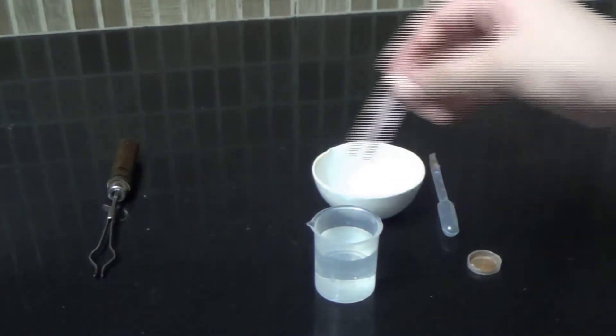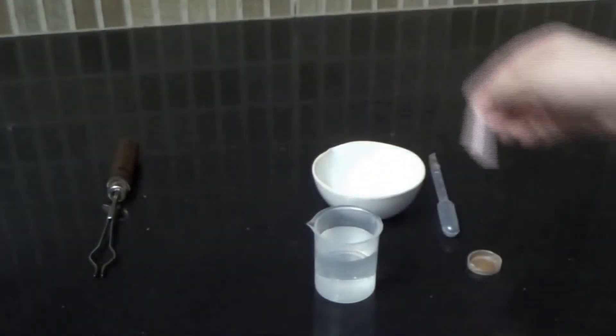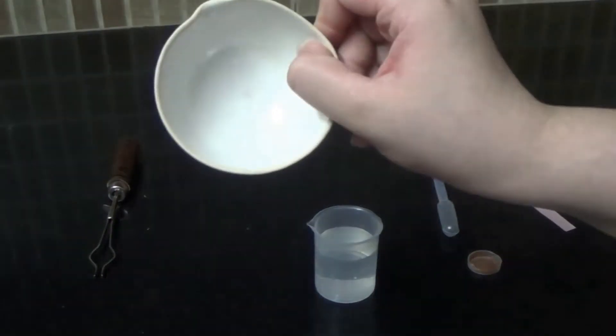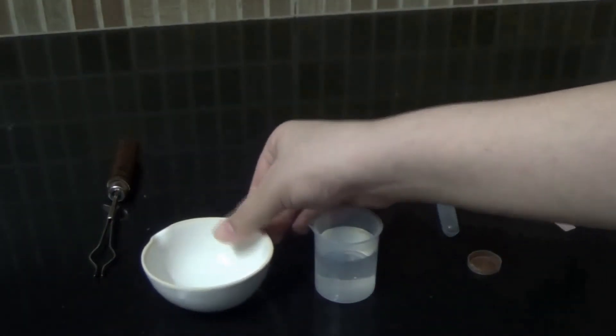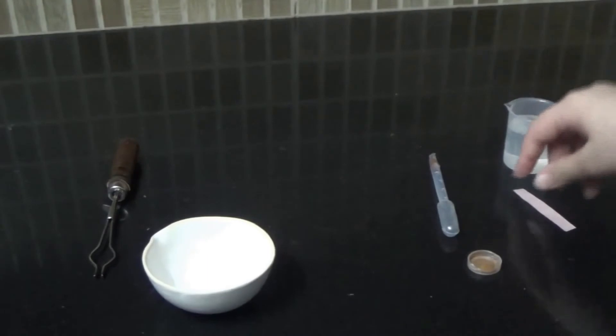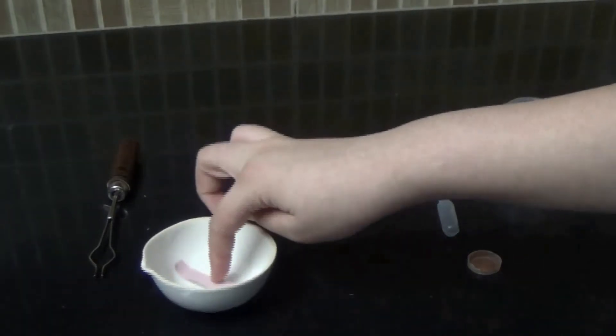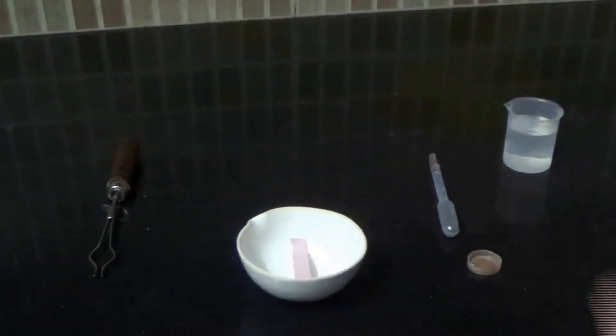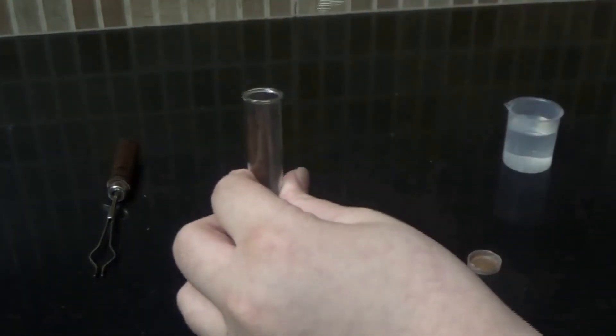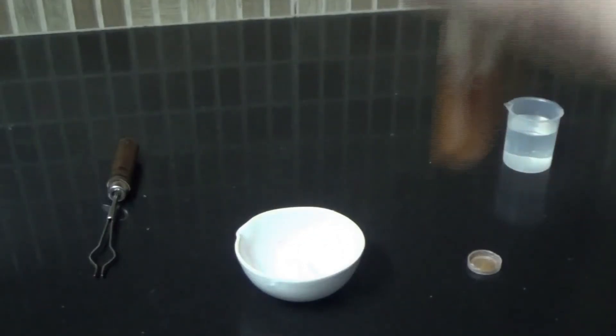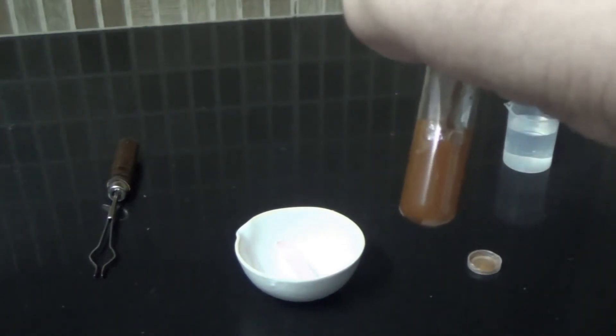Place the litmus paper inside the cup. Now add a drop of the rust solution on the litmus paper.